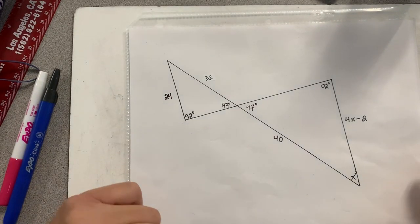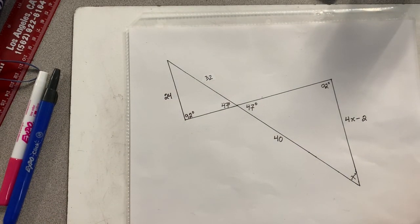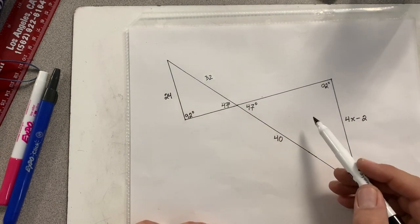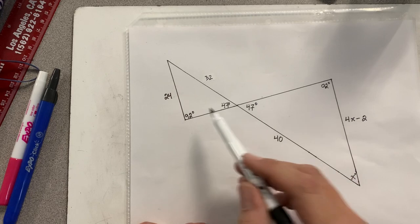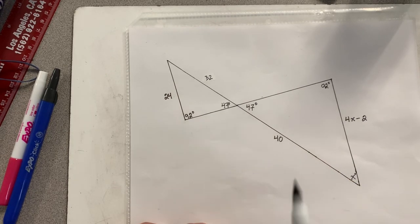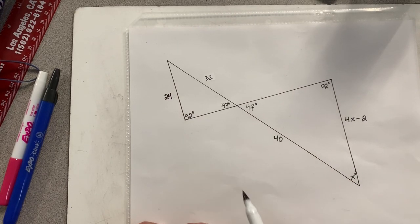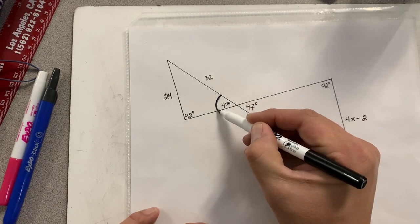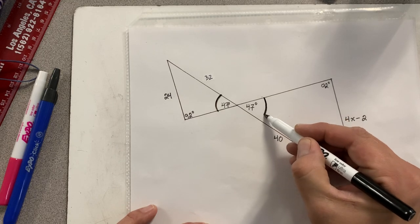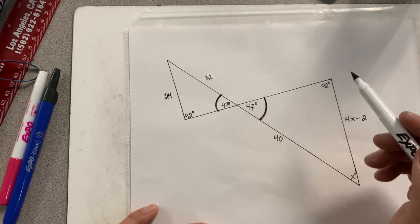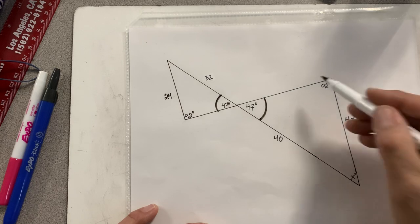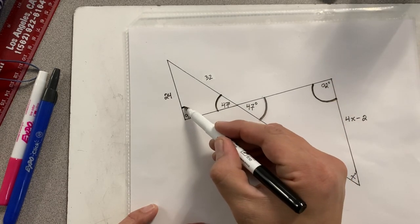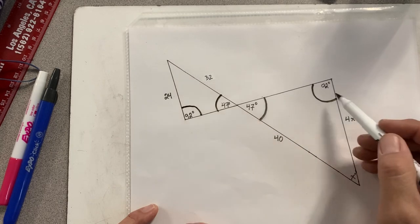All right, so what we have here is a bowtie problem. Now these two triangles are similar. The reason I know these two triangles are similar is because similar triangles have all corresponding angles that are exactly the same. This angle here is exactly the same as this angle here, and they're corresponding angles. This angle here corresponds to this angle right here, and they're both exactly the same.